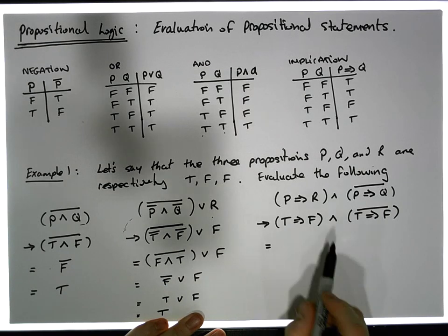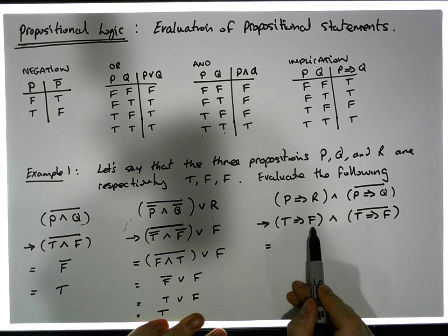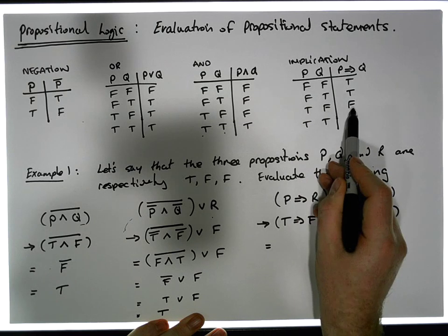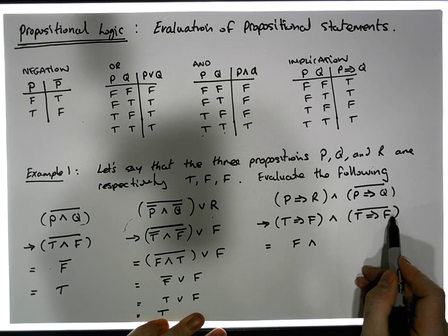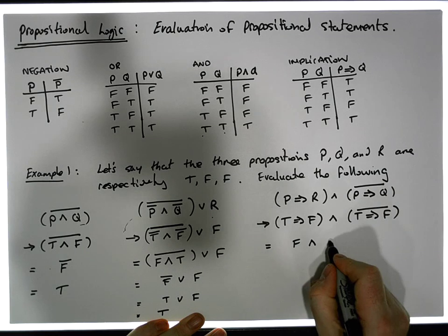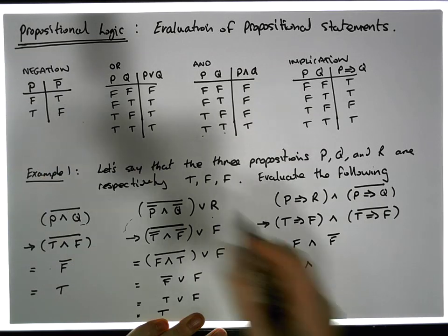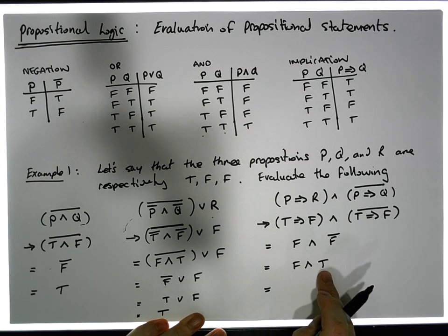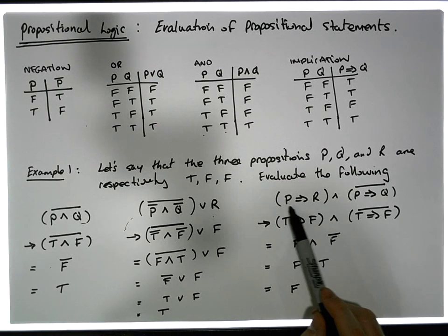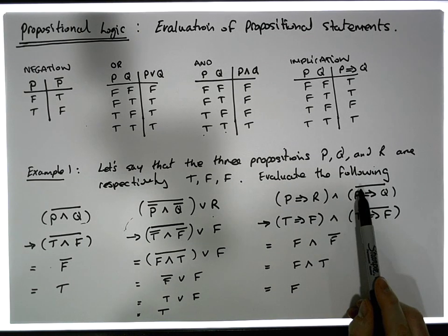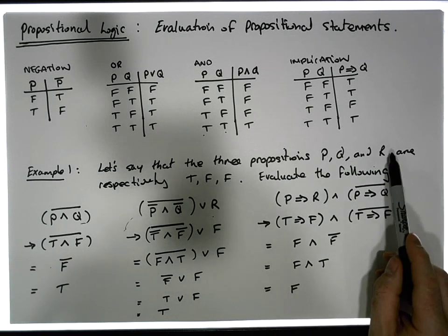We can't do the AND until we evaluate both the left and right sub-expressions. The left sub-expression is T implies F. We know from implication that true implies false is actually false, so this evaluates to false. Similarly, the right sub-expression — true implies false — is also false, which negated becomes true. Now we have false ANDed with true, and false ANDed with true is false. So this proposition — P implies OR, ANDed with P implies Q, negated — evaluates to false when P is true, Q is false, and OR is false.